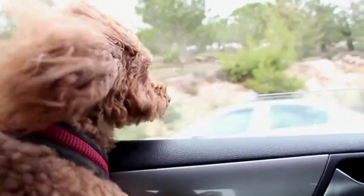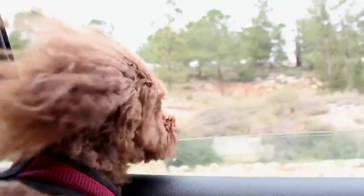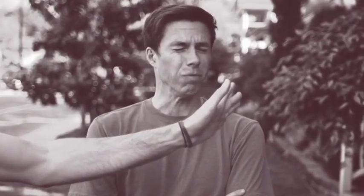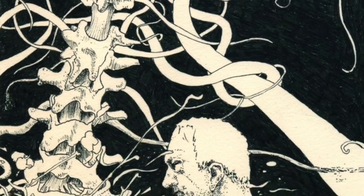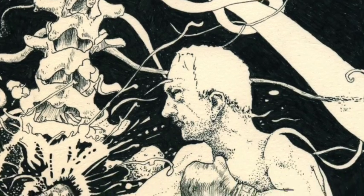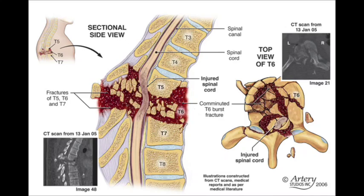Basically, the spinal cord is life. But what happens when something goes wrong? A spinal cord injury. Spinal cord injury occurs when there is damage to the spinal cord, thus affecting communication between the central nervous system and the periphery.